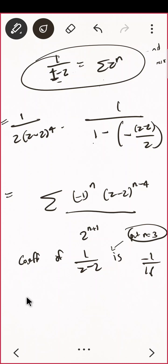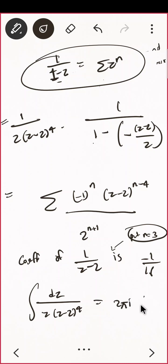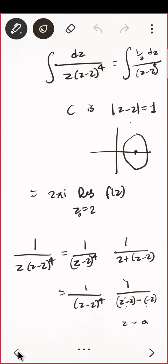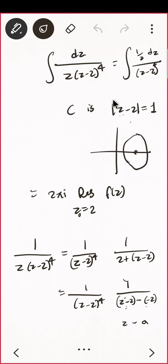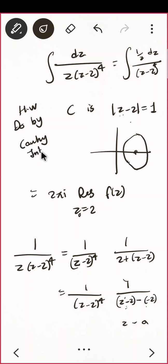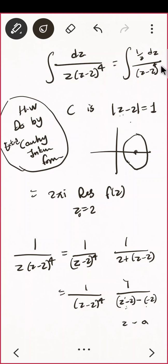Therefore ∮ dz / [z(z−2)⁴] = 2πi × (−1/16) = −πi/8. We solved this by using the Laurent series expansion and finding the b₁ coefficient. You can also solve it using the extended Cauchy integral formula — that is a homework for you. Since the power is 4, you would need to take three derivatives of 1/z.